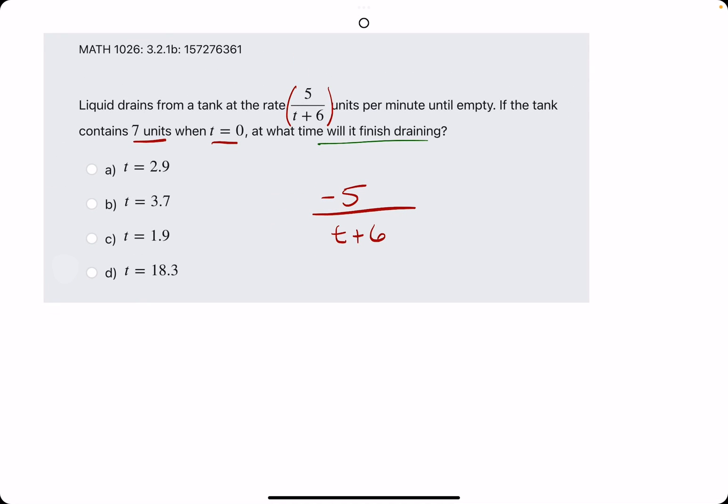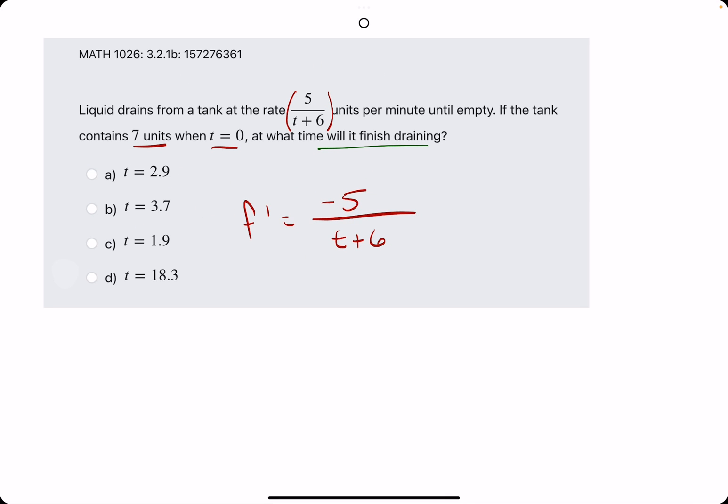We are calling f prime negative five over t plus six. The process will be to take the anti-derivative of this.